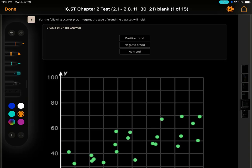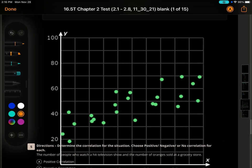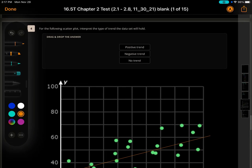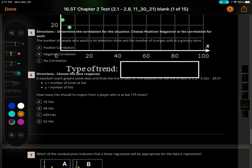Question number 4. For the following scatter plot, interpret the type of trend the data set will hold. It's pretty weak, but it looks like it's going to be a positive trend. Number 5, determine the correlation for the situation. Choose positive, negative, or no correlation. The number of people who watch a hit television show and number of oranges sold at a grocery store. I don't think they're related, so there's no correlation.